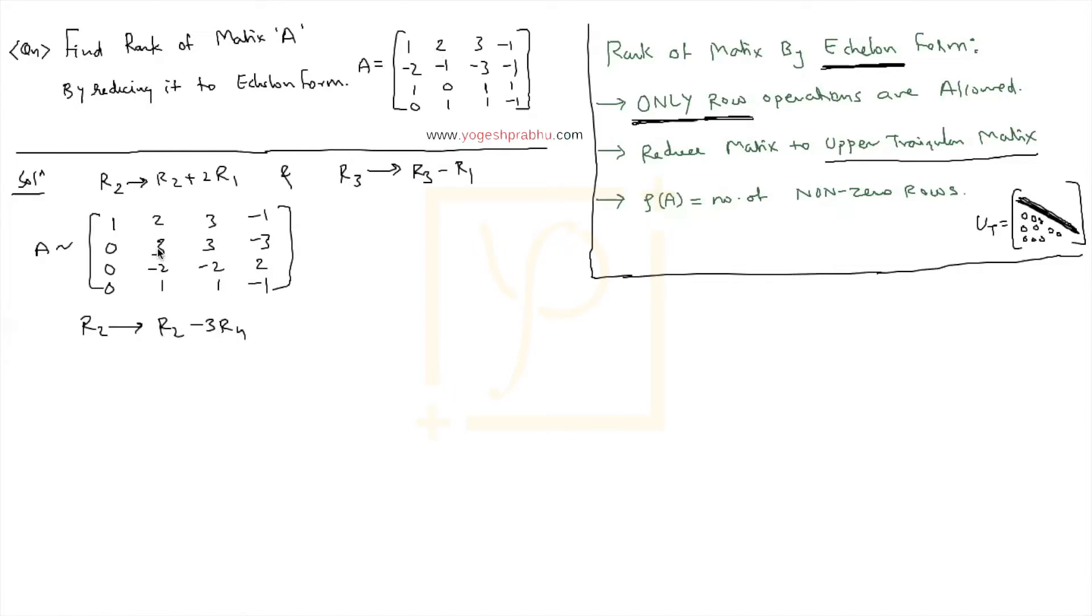And the next step will be R3 becomes R3 plus 2 times R4. So I'm going to use R4 and reduce R2 and R3. Let me write that nicely now. This is going to be 1, 2, 3, minus 1, first row.